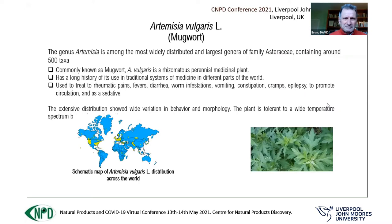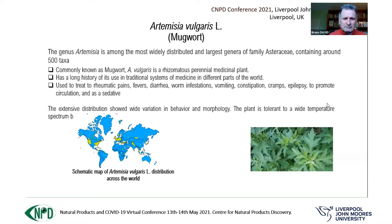Essential oils are present in many plant families, but most widely in Zingiberaceae, Asteraceae, and Lamiaceae. We selected a plant species belonging to family Asteraceae: Artemisia vulgaris. Genus Artemisia is among the most widely distributed and largest genera in family Asteraceae. It is commonly known as mugwort.